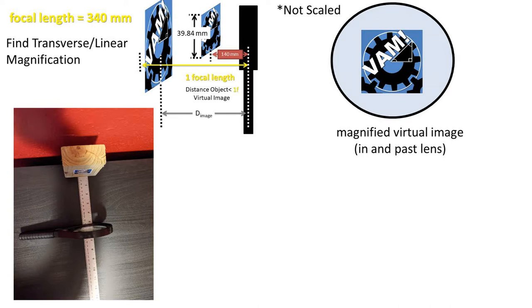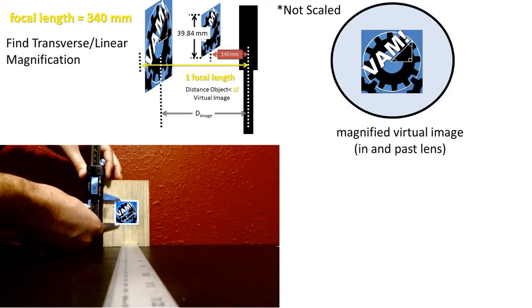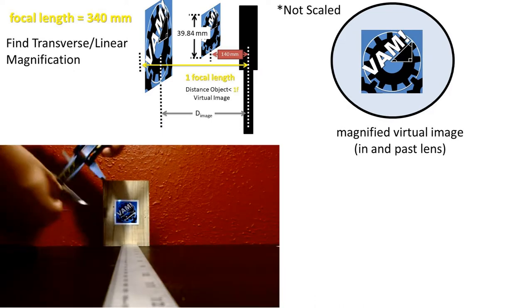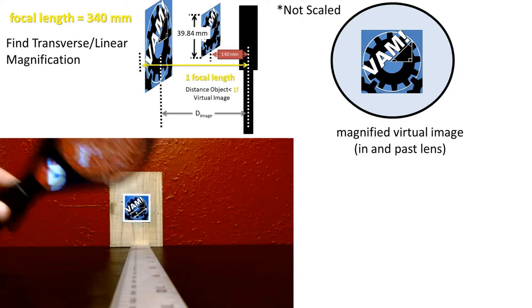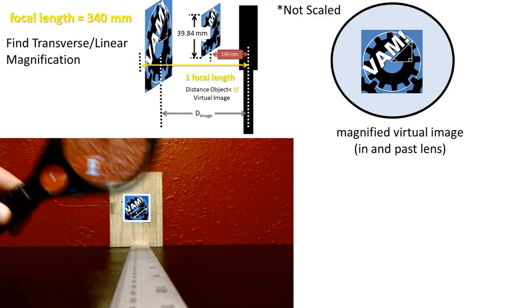In this problem, we have a magnifying glass that is placed at 140 millimeters from the object, which has a height of 39.84 millimeters. We want to find the transverse and linear magnification for this magnifying glass with the object at this location.